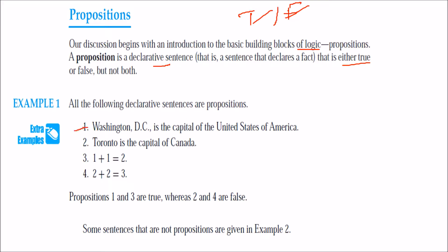Washington DC is the capital of the United States of America — this is true, so it is a proposition. Toronto is the capital of Canada — it is false, but because it gives you false, so it is a proposition. 1 plus 1 is 2 — it is true, so it is a proposition. 2 plus 2 is 3 — this is false, but even though it is false, it is still a proposition.